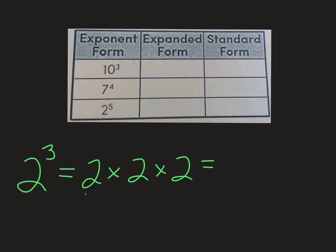What we do is we do 2 at a time. 2 times 2 is 4. Then if I take that 4 times another 2, I would get 8. So the standard form is the answer, or the product, or the value of this exponent.